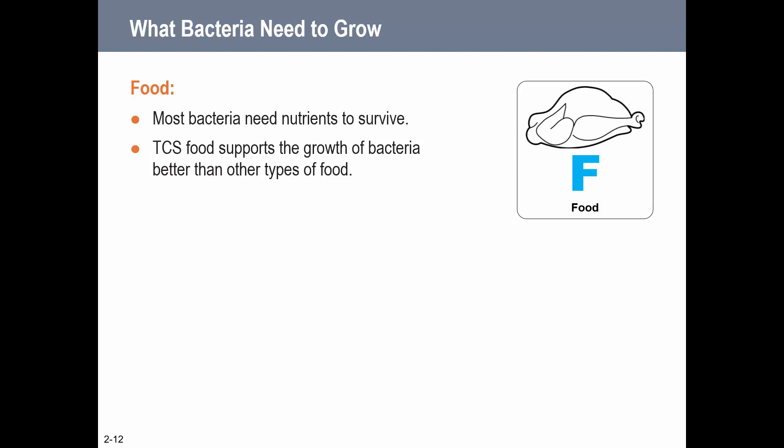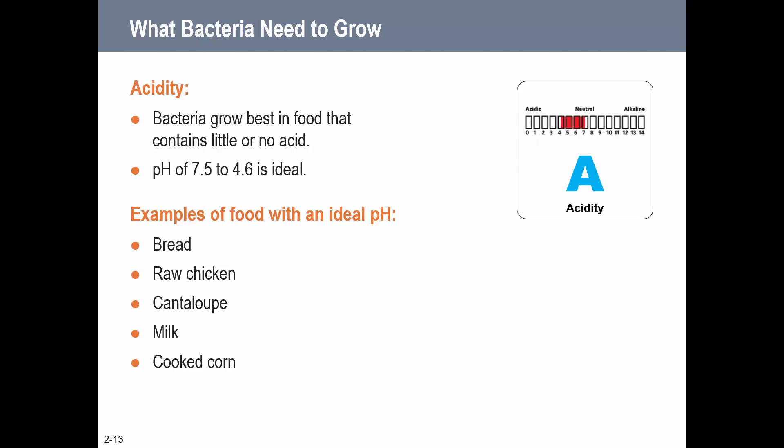The F in FATTOM stands for Food. Most bacteria need nutrients to survive, and TCS foods tend to support bacterial growth better than other foods. If you remember from chapter 1, those are foods such as meat, eggs, baked potatoes, cut melon, and cut tomato - foods that bacteria grow better in. That is one thing we look at when deciding what bacteria need to grow.